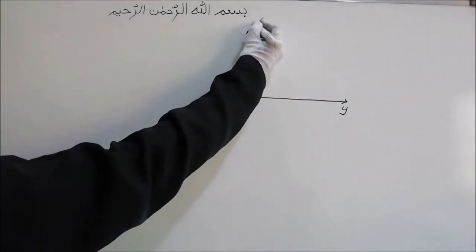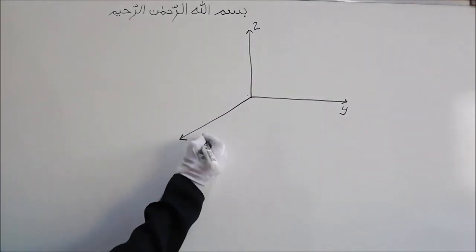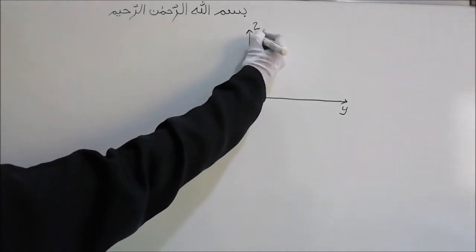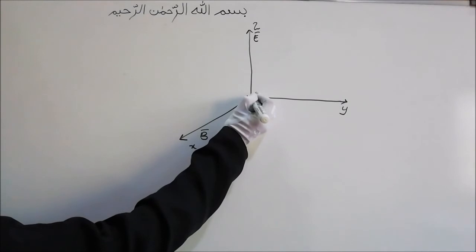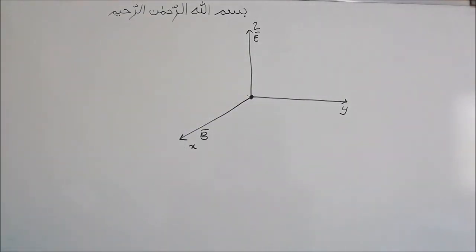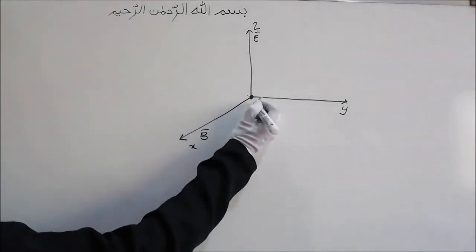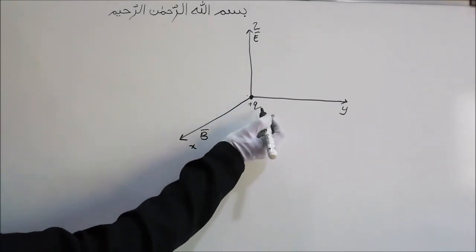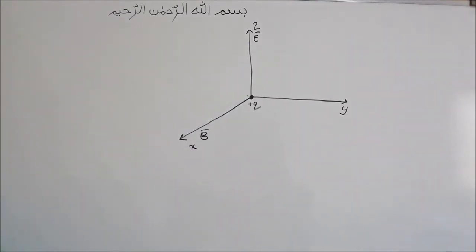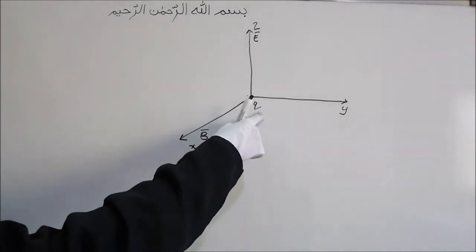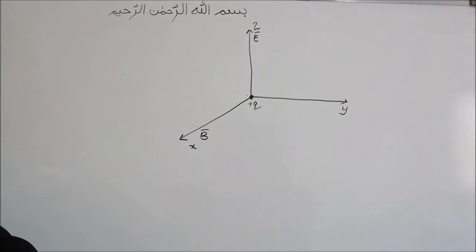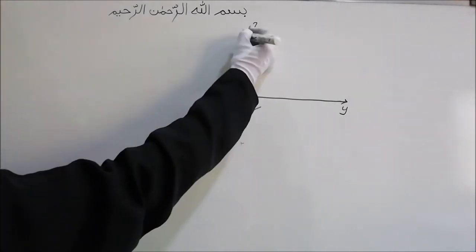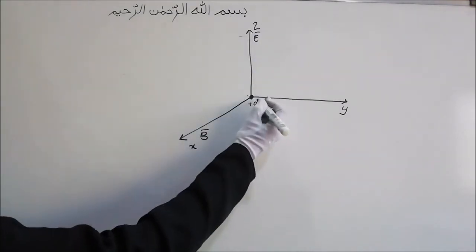Consider: the x-axis, y-axis, and z-axis. Along the x-axis we have a magnetic field B, along the z-axis we have the electric field E, and we have a positive charge Q at the origin. Since this charge is initially at rest, there will be no magnetic force acting on it. The only force acting on it will be due to the electric field, which is upward, so the charge will be attracted upward.